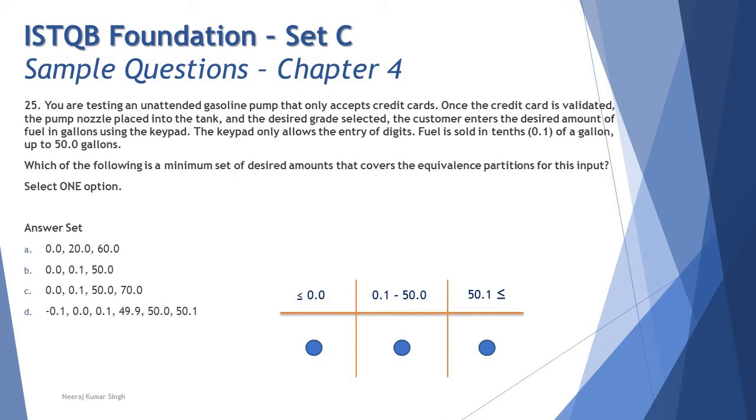Option C: 0.0 covers the first range, 0.1 covers the second range, 50.0 covers the second range, and 70.0 covers the third range. It looks correct.